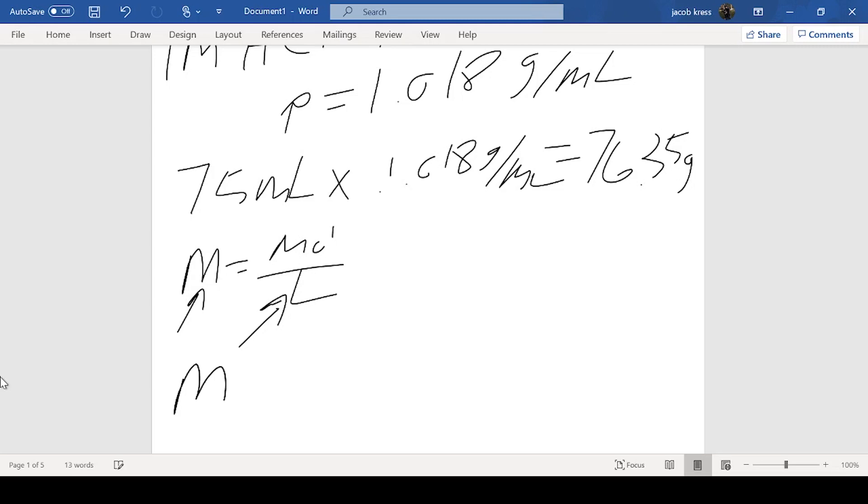What we get is molarity times liters equals moles. If I substitute all my values in, we started with a one molar solution, so it's times one, which is just my volume: 0.075. One times that is just itself, so I have 0.075 moles of HCl.